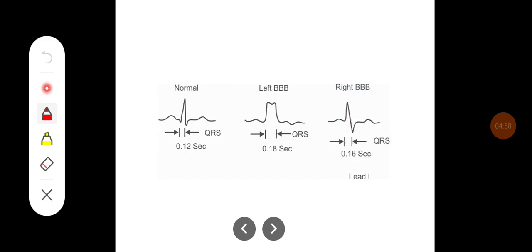Here you can see this is a normal complex and in left bundle branch block we can see the M pattern in the ventricular complex in lead one. This is seen in lead one and this is seen in V6.